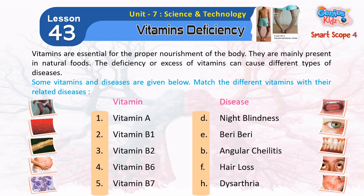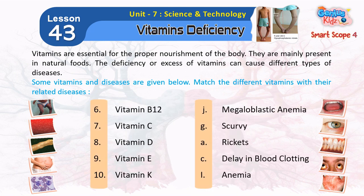3. Vitamin B2 — B. Angular Cheilitis. 4. Vitamin B6 — F. Hair Loss. 5. Vitamin B7 — H. Dysarthria. 6. Vitamin B12 — J. Megaloblastic Anemia.